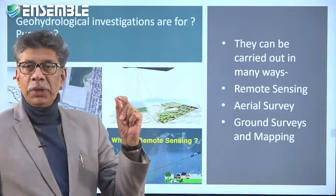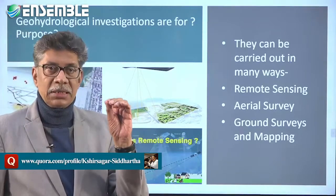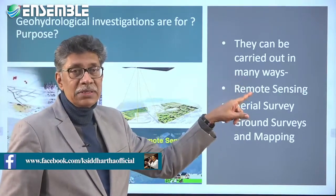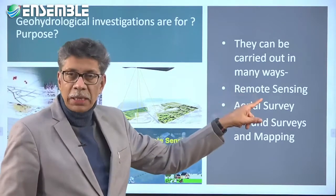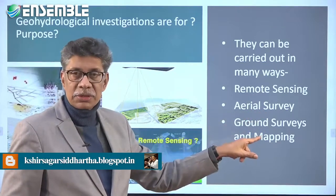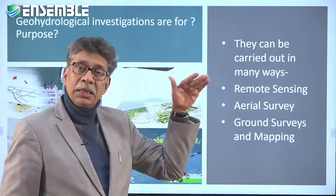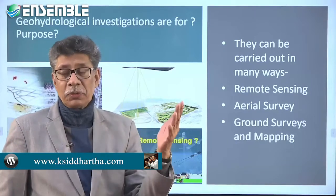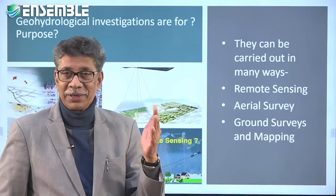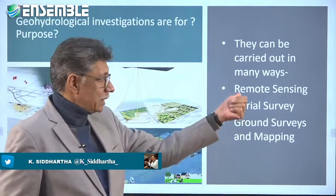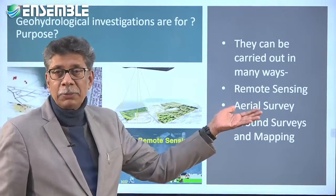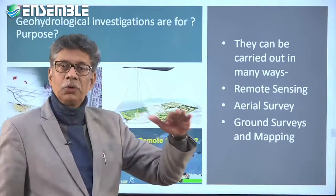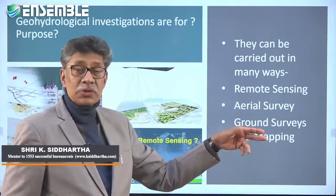Coming to why mapping is significant for geohydrological investigations — geohydrological investigations can be carried out in three ways: remote sensing, aerial survey, and ground survey with mapping. Remote sensing also produces a map comprising a variety of colors — imagine 254 million colors in a remote sensing map. Aerial survey is conducted with reconnaissance aircraft that survey an entire region and prepare maps in a different format.